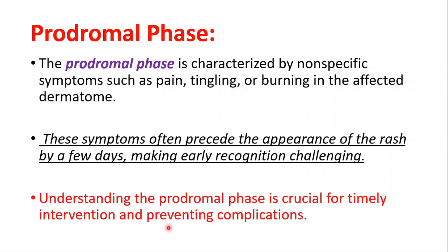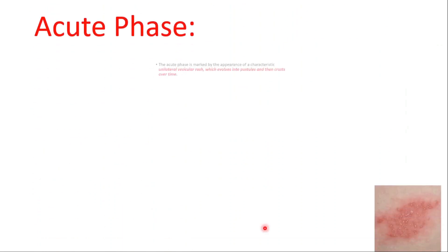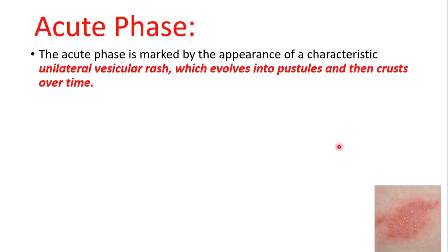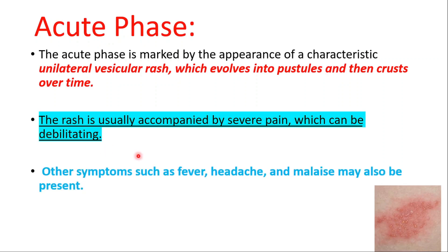In the acute phase, we have a unilateral vesicular rash which evolves into pustules and then crusts over time. The rash is usually accompanied by severe pain, which can be debilitating. Other symptoms include fever, headache, and malaise.